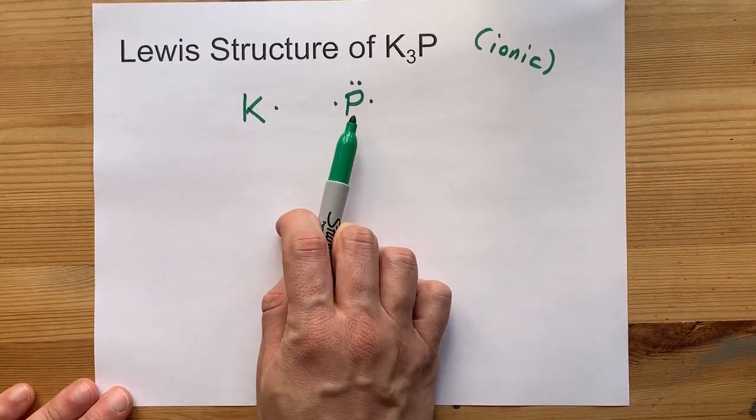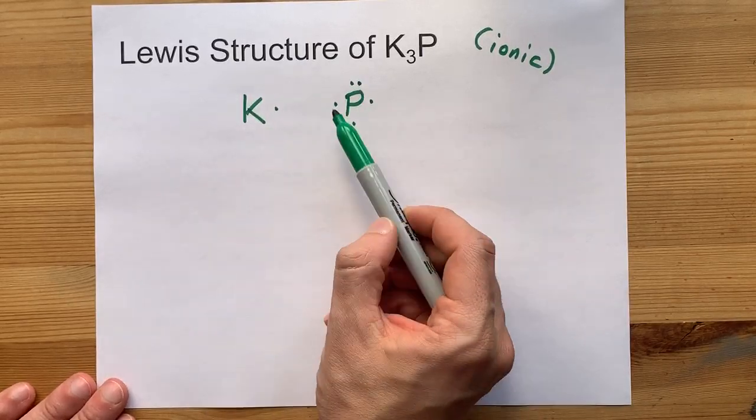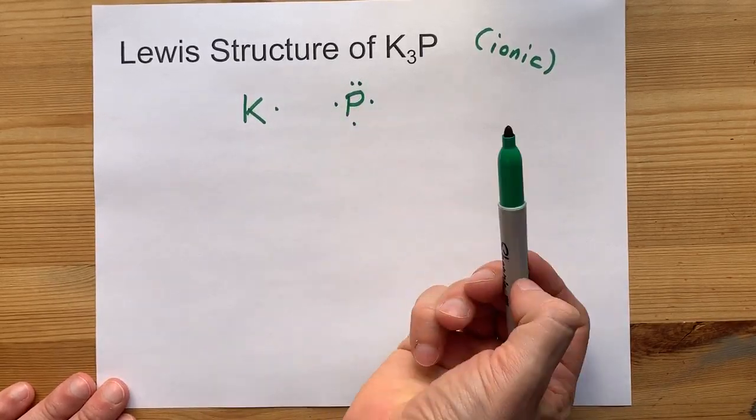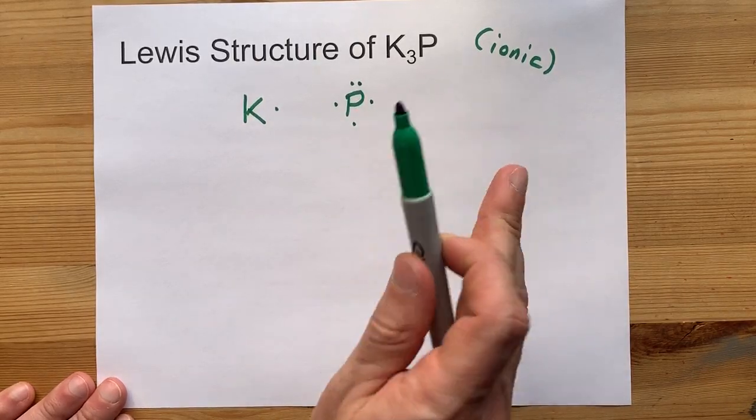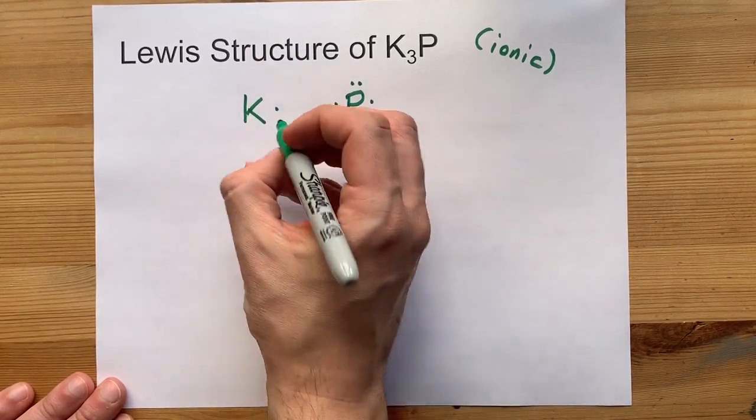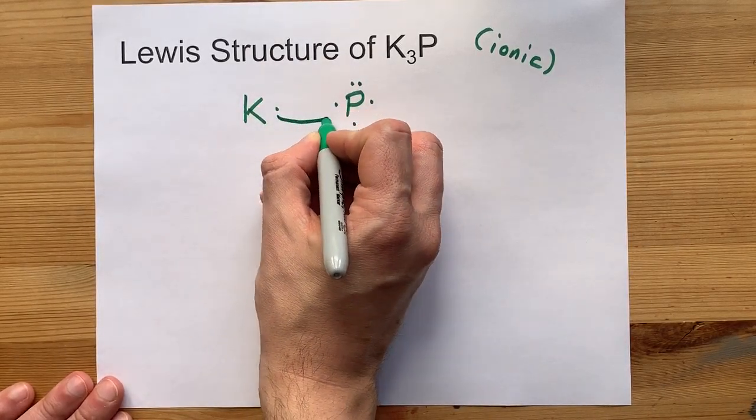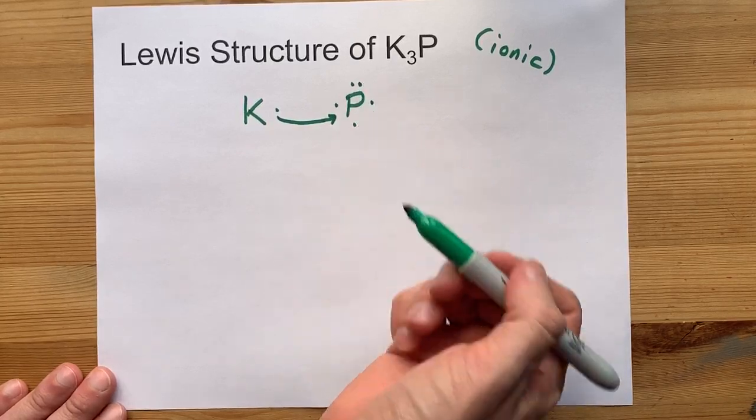Now non-metals want the octet rule satisfied. That means it wants a full outer shell of eight electrons to be stable and happy. Phosphorus has five which is more than halfway there but it's still not eight. This potassium as a metal will gladly give up an electron. Now phosphorus has six.